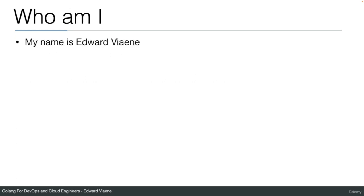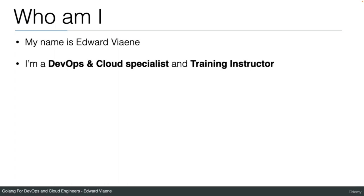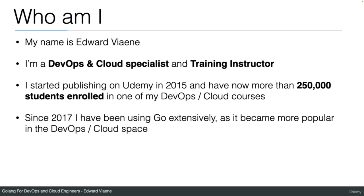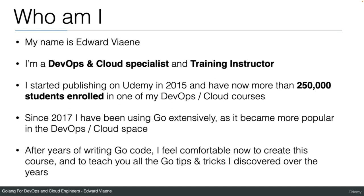My name is Edward Vianne. I'm a DevOps and Cloud specialist and training instructor. I started publishing on Udemy in 2015 and now have more than 250,000 students enrolled in one of my DevOps and Cloud courses. Since 2017, I have been using Go extensively as it became more popular in the DevOps and Cloud space. After years of writing Go code, I feel comfortable now to create this course and teach you all the Go tips and tricks I discovered over the years.